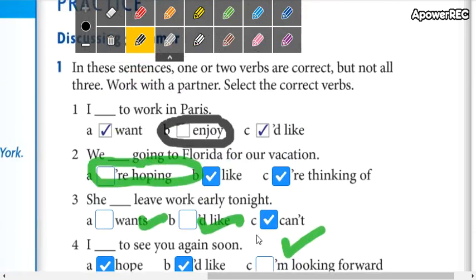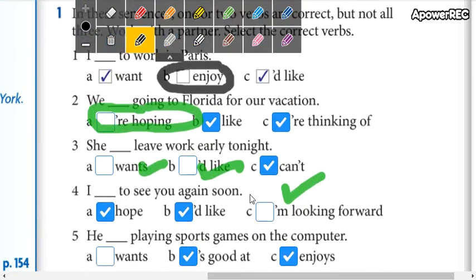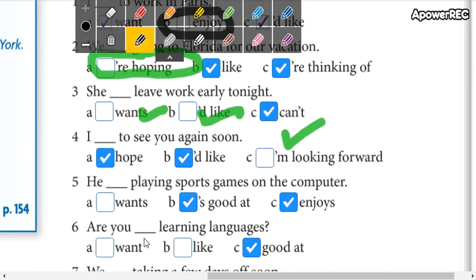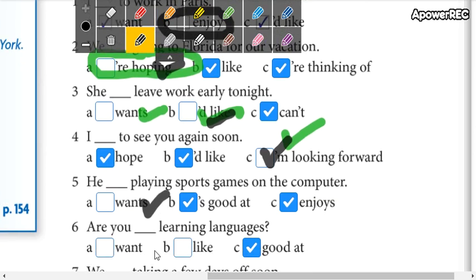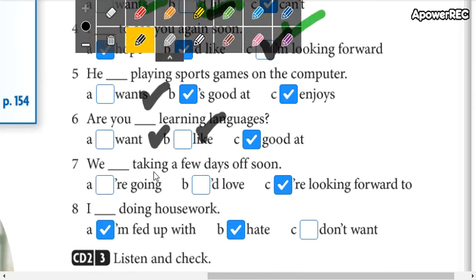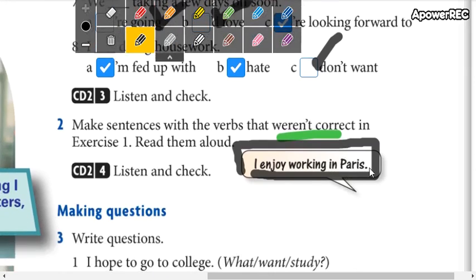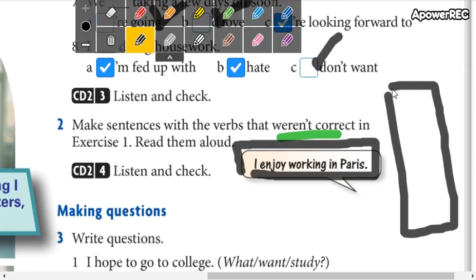So you're going to correct all the sentences that you didn't choose. You're going to write one, two, three, four, five, six, seven, eight, nine sentences. You can write in this part or on another piece of paper.